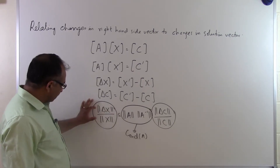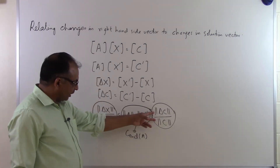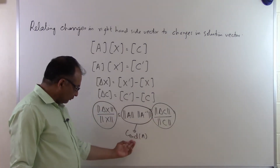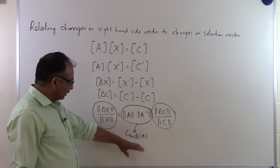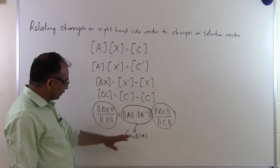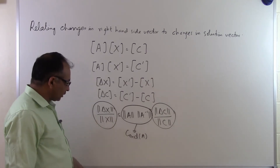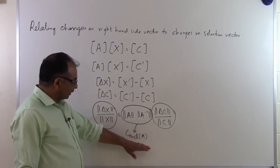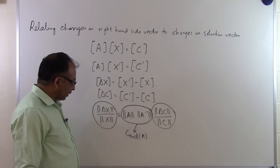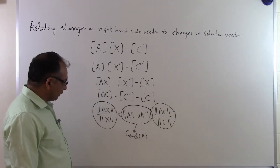The relative change in the solution vector can get amplified by the condition number of A. If we have an ill-conditioned system of equations, the condition number of A is going to be large. If the system of equations is well conditioned, then the condition number of A, the coefficient matrix, is going to be small.